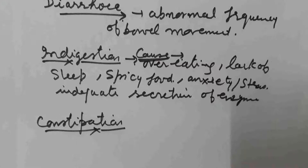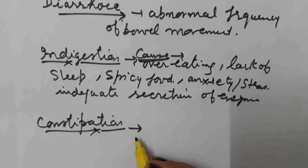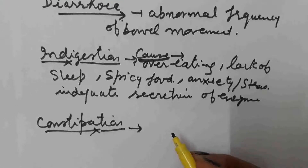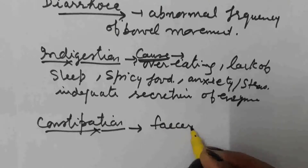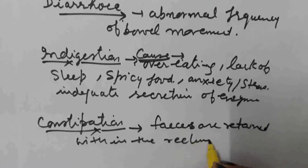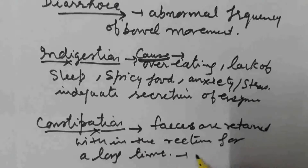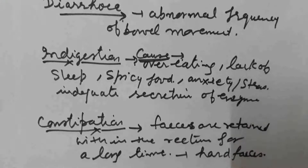Constipation mein kya hai — the feces are retained within the rectum as the bowel movements occur irregularly. Long time tak jo feces hai woh rectum mein rah jaati hai, rectum se wapas colon mein jaati hai, aur colon ka function hai water absorb karna — toh more and more amount of water is absorbed from the feces, jis wajah se jo feces hai woh kaafi hard ho jaati hai. This is known as constipation. Feces are retained within the rectum for a long time, jis wajah se water absorption increase ho jaati hai aur feces hard ho jaati hai — ise hum constipation bolte hain.